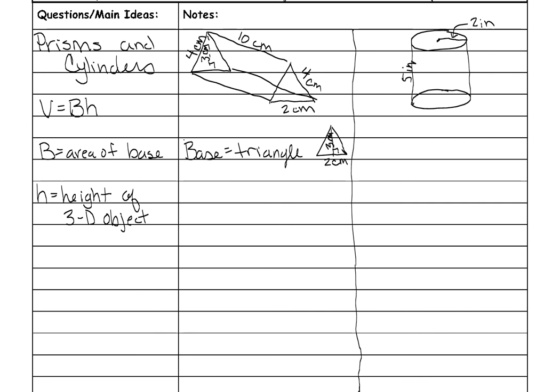So remember the area of a triangle is half the base of that triangle times the height. So it's half the base of my triangle is 2 times the height is 3 and half of 2 is 1 and 1 times 3 is 3 centimeters squared is the area of my base. And the height of my prism is this part right here, which is 10 centimeters.